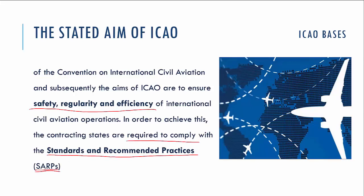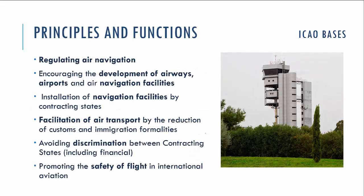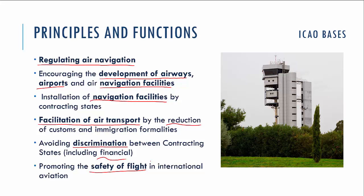To achieve these aims, ICAO focused on principles such as regulating air navigation, encouraging the development of airways, airports, and air navigation facilities, facilitating air transport by reducing customs and immigration formalities between contracting states, avoiding discrimination including financial discrimination, and promoting the safety of flight in international aviation.